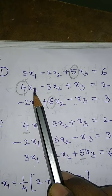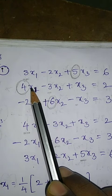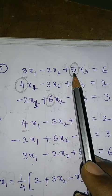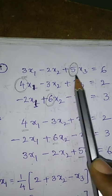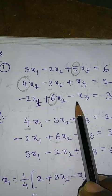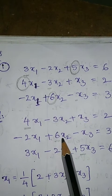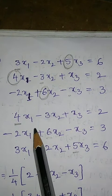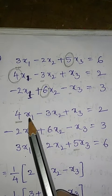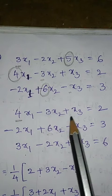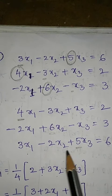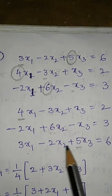Since in the second equation x1 coefficient is dominant, we arrange the second equation as the first equation. In the first equation the coefficient of x3 is dominant, so it is written as the third equation. In the third equation, the coefficient of x2 (which is 6) is dominant, so it is arranged as the second equation. Now the system is principal dominant: in the first equation, 4 is greater than 3 and 1; in the second, 6 is greater than 2 and 1; in the third, 5 is greater than 3 and 2.